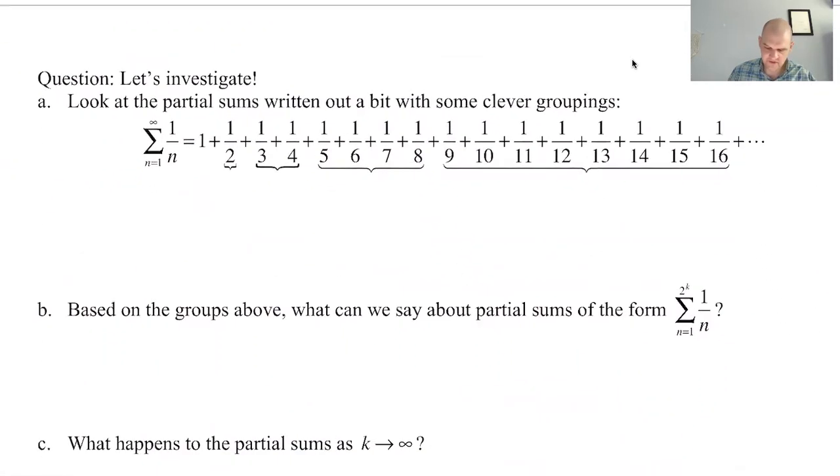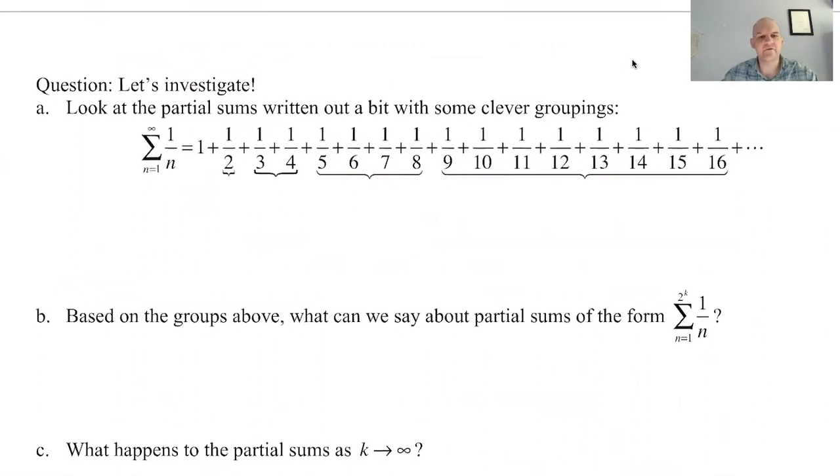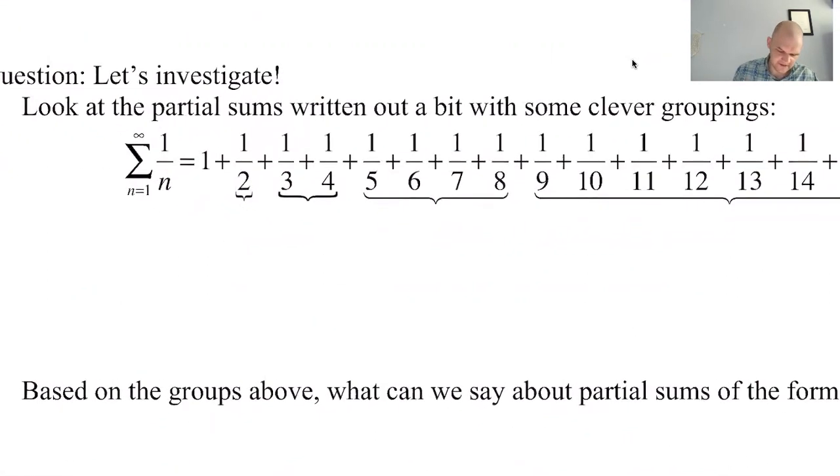And so what we're going to do is try to investigate this in a slightly different way. If we look at the partial sums written out a bit differently, and then grouped according to those upper bounds that we used, there's something that happens that's a little weird. This grouping that we have right here is definitely equal to 1 half, obviously.